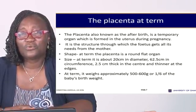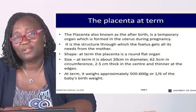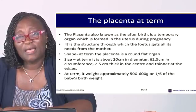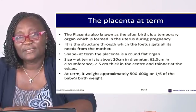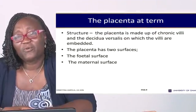Now let's discuss the placenta at term. The placenta is also known as the afterbirth, and it is a temporary organ formed in the uterus during pregnancy. It is the structure through which the fetus gets all its needs from the mother — nutritional needs, respiratory needs, protective needs. The shape at term: the placenta is a round, flat organ, about 20 centimeters in diameter and 2.5 centimeters in circumference. It is about 2.5 centimeters in thickness at the center, becoming thinner towards the edges. At term it weighs approximately 500 to 600 grams, or one-sixth of the baby's birth weight.